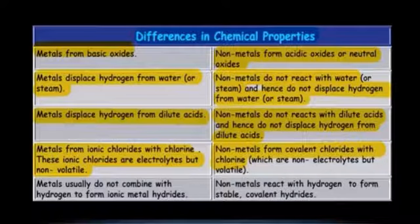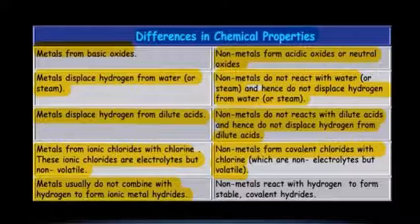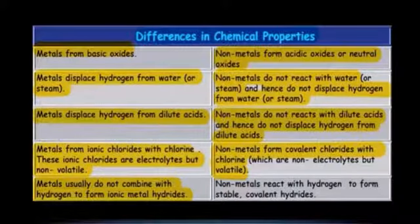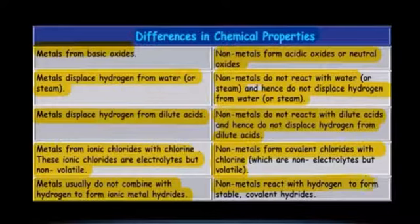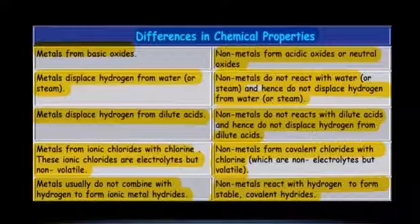The last property: metals usually do not combine with hydrogen to form ionic metal hydrides — they do not combine with hydrogen. But non-metals react with hydrogen and form stable covalent hydrides. So these are the differences between the chemical properties of metals and non-metals. Thank you.